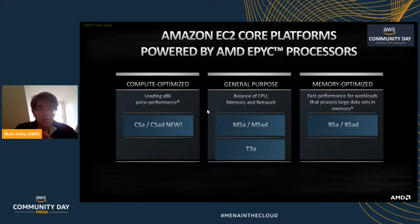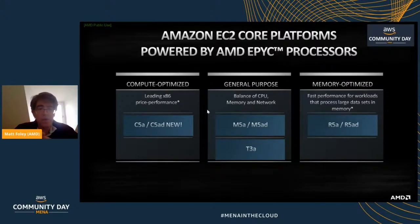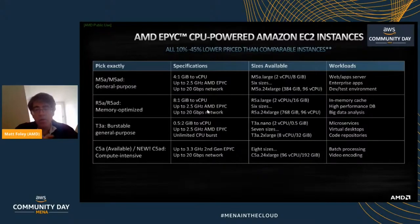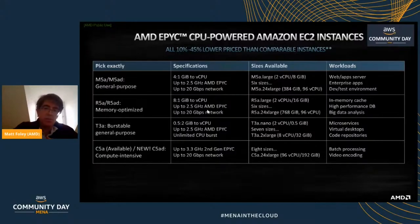In summary of the instances: we have compute-optimized instances — C5a and C5ad — available now, some of the highest performing instances you can get anywhere, powered by second-generation EPYC. For general purpose and memory optimized, we have the M family, T family, and R family, implemented on first-generation EPYC — currently more available than C5a and C5ad as those new instances get built out. From a specs-and-feeds perspective, you can see the sizes available and the workloads that have been tested on them.